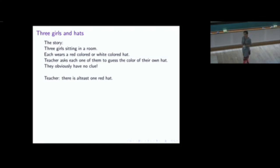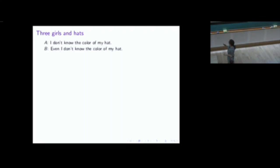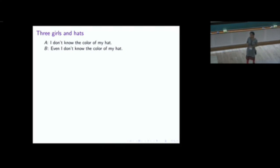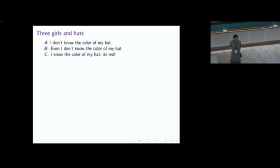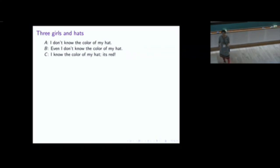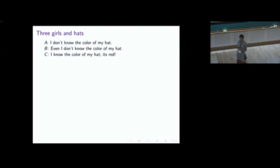At this point a dialogue takes place between the three girls. The first girl says: I don't know the colour of my hat. The third girl then says: I know the colour of my hat, it's red. So what happened was they admitted lack of knowledge to each other, and in the process some knowledge got conveyed. How did the third girl figure out the colour of her own hat?